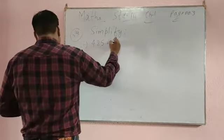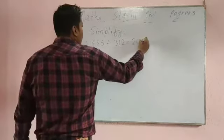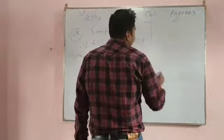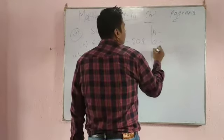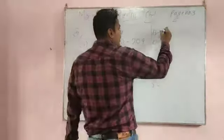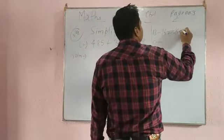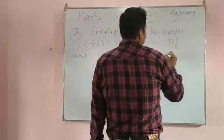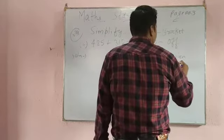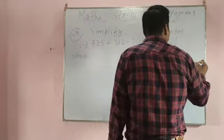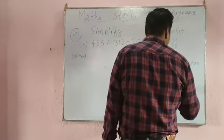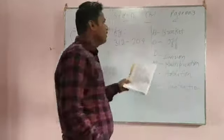Question number 29 is simplify. First question you can see - 425 plus 312 minus 209. Now here you have to follow the BODMAS. What is BODMAS you can see - B-O-D-M-A-S. B means bracket.